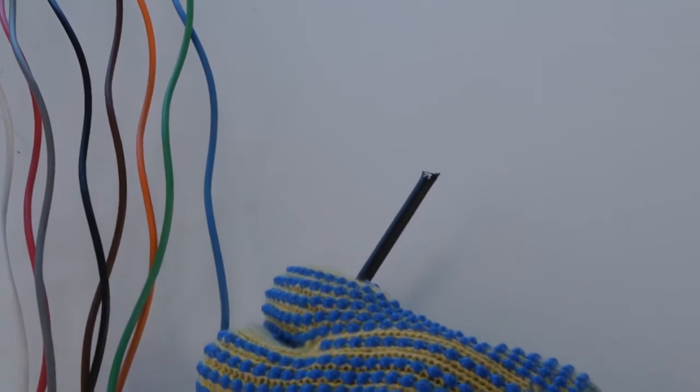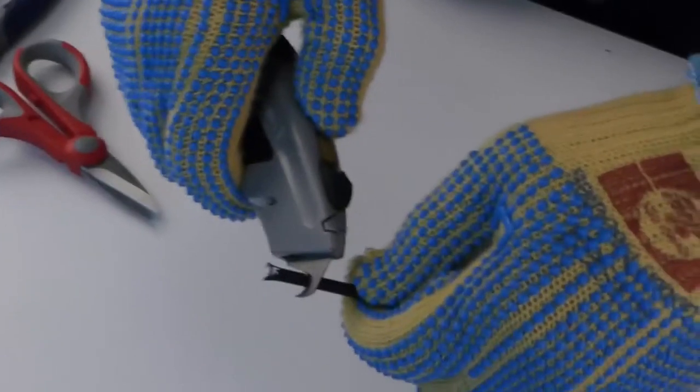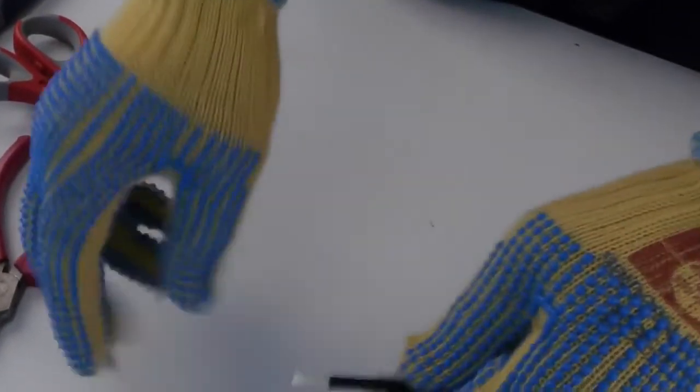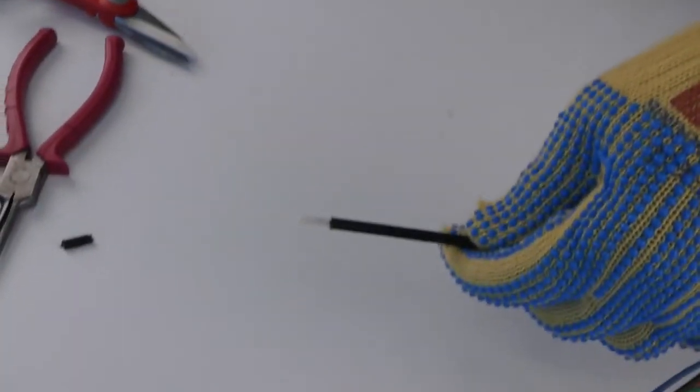It may be necessary to remove some outer coating off the strength member in order for the strength member to fit into the closure's strength member. Do so by using a hook blade knife and removing 1 to 2 inches of the outer coating.